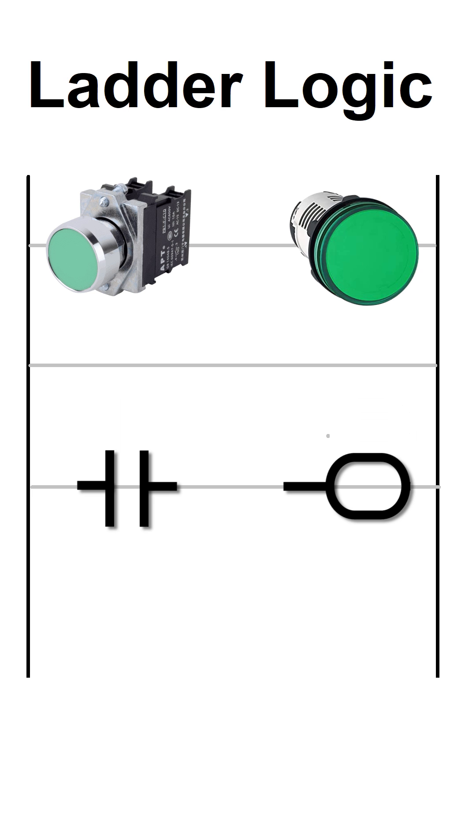If we press the push button, it will close the normally open contact bit and this bit will turn on the output coil bit and indicator turns on. Once we release the push button, the contact bit opens up and it will turn off the indicator output.